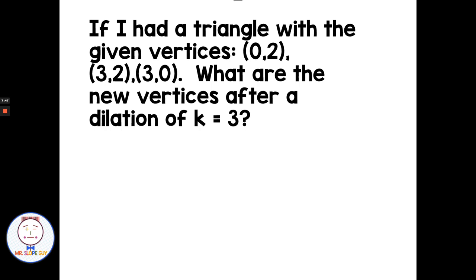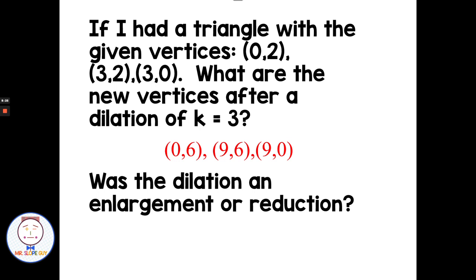If I had a triangle with the given vertices — (0, 2), (3, 2), (3, 0) — what are the new vertices after a dilation of 3? If my scale factor is 3, I can take each of these points and multiply by 3 without even needing a graph. 0 times 3 is 0, 2 times 3 is 6, 3 times 3 is 9, 2 times 3 is 6, 3 times 3 is 9, and 0 times 3 is 0. So I get the new ordered pairs just by multiplying everything by the scale factor. Multiplying by 3 made the new triangle 3 times larger, so that is an enlargement.